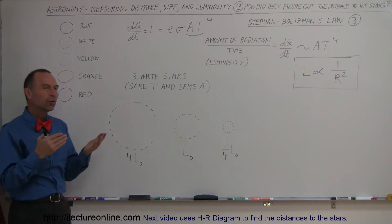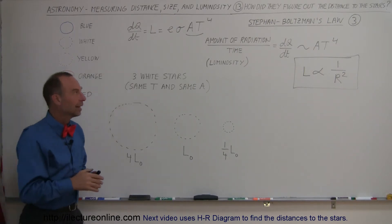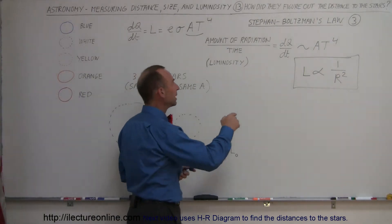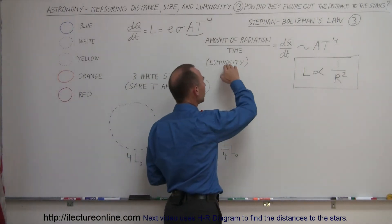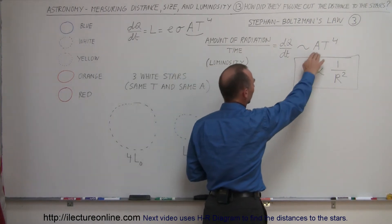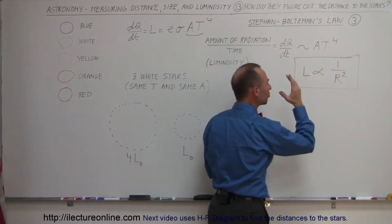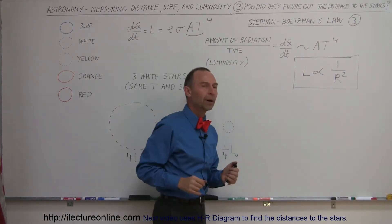With Stefan Boltzmann's Law we also realized that the amount of radiation, or the luminosity of a star, is proportional to the size of the star and the temperature to the fourth power.